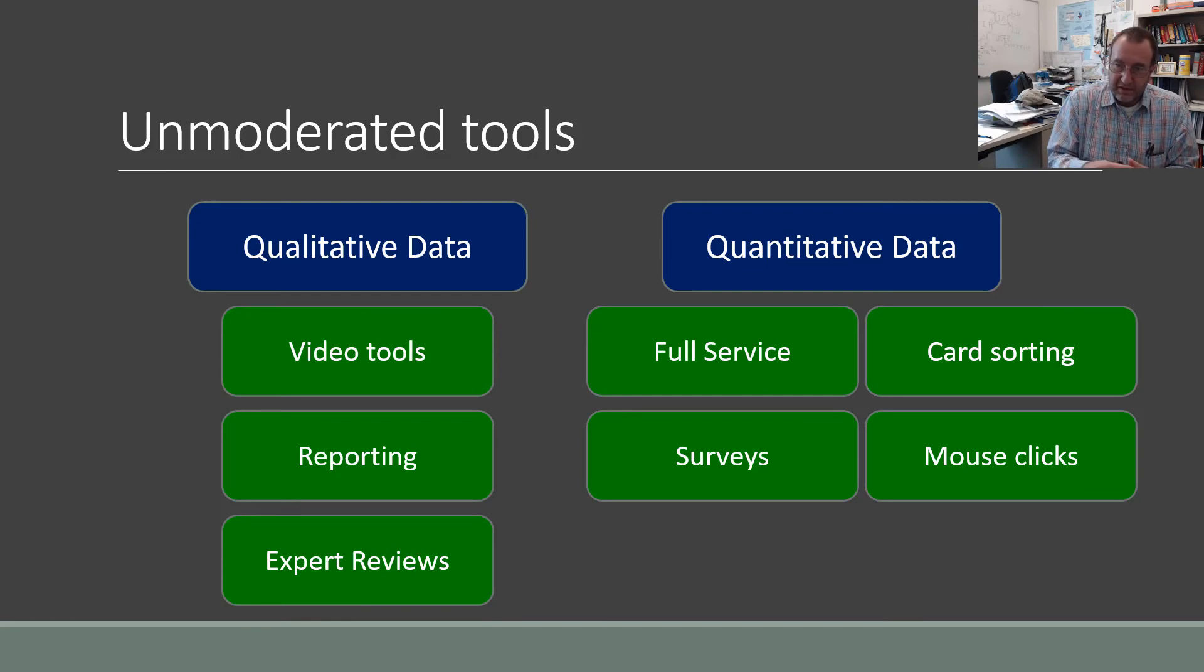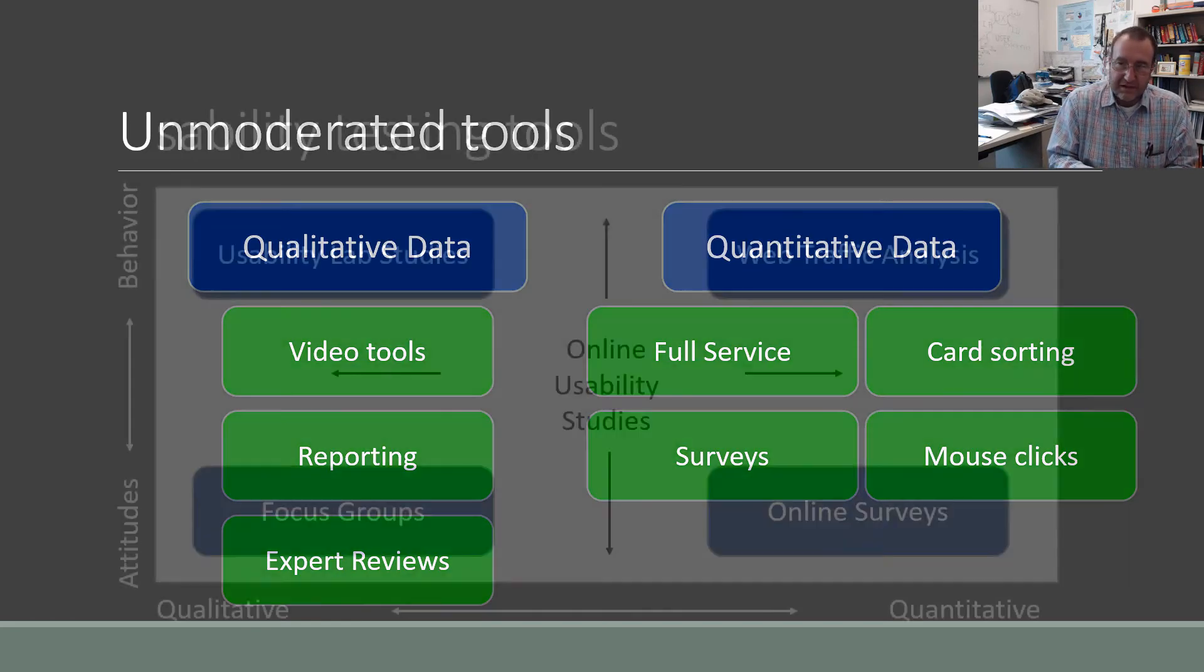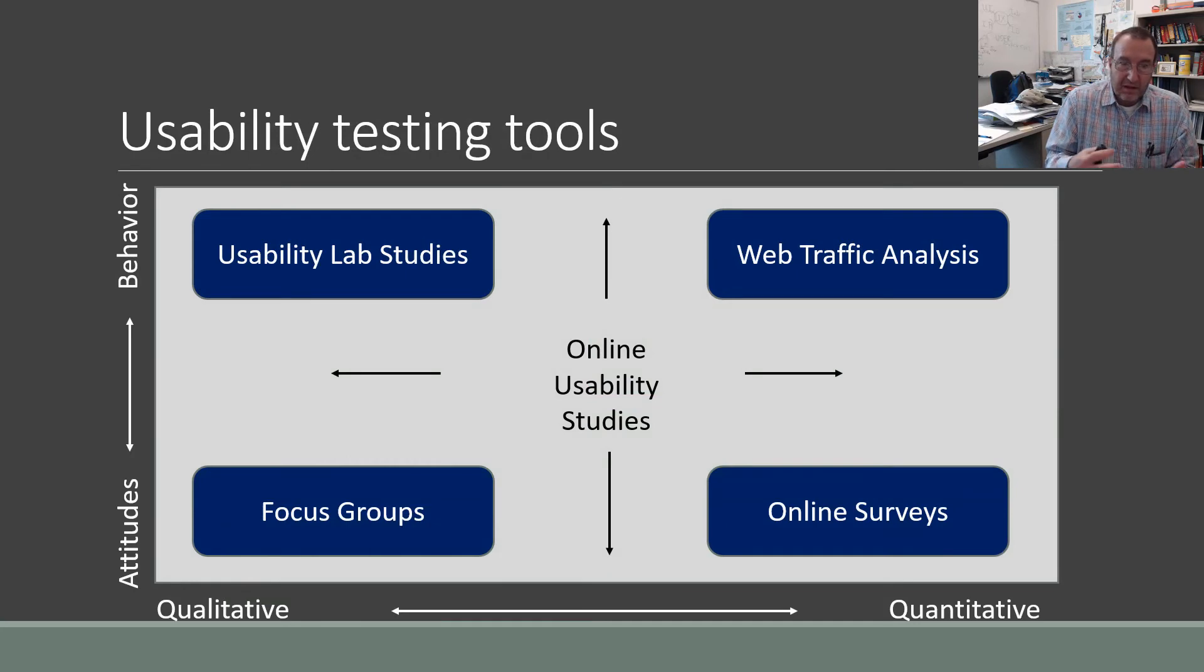There's also the quantitative data on the right hand side. We can count these things and get statistics about them. In our usability testing tools this builds off of a talk we've already discussed this semester. We will be working with the usability lab studies in the upper left hand corner which are more qualitative and looking at behavior as opposed to some of the others on the right hand side which are quantitative.